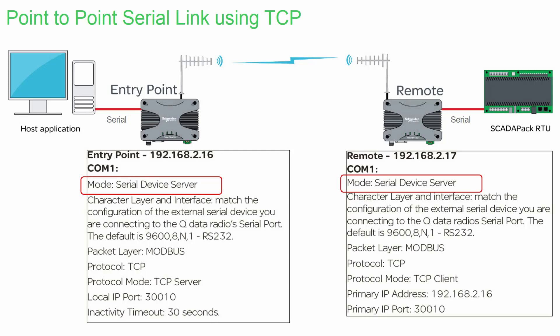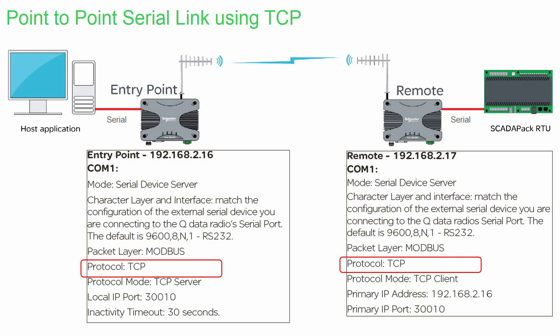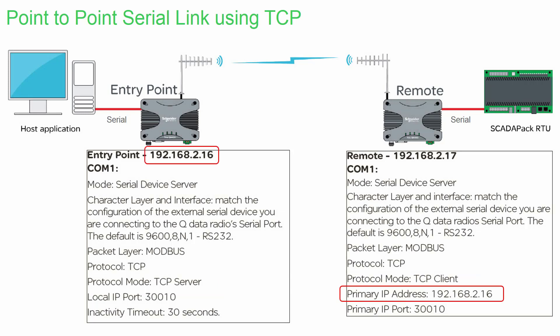The packet layer has been set to Modbus, allowing transport of the Modbus RTU protocol or a similar protocol which requires port buffering. The transport protocol has been set to TCP, providing a high-reliability connection-oriented service. The entry point radio is set to a protocol mode of TCP server, which tells it to respond to requests from the remote radio, which is configured as a TCP client. The TCP client — in this case the remote radio — requires a primary IP address which must be set the same as the IP address of the entry point radio. Finally, the remote radio configured as the TCP client must be configured with a primary IP port number the same as the local IP port number in the server radio, which here is the entry point.